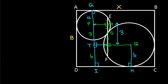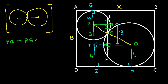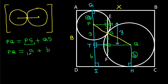Now if we join PQ, it will pass through point S, because if two circles are touching each other and we join the centers of both circles, the line passes through their common point of contact. So PQ = PS + QS = A + B = 5, therefore PQ = 5.